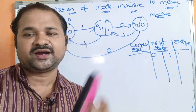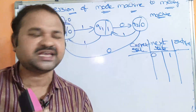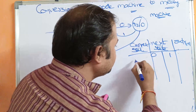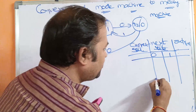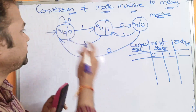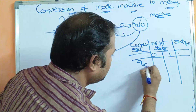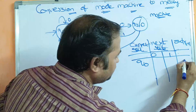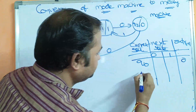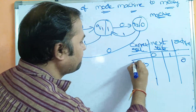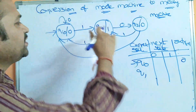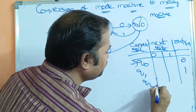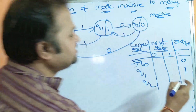For all inputs, the output is the same. The starting state is Q0. Q0 output is 0. Next state is Q1; Q1 output is 1. Next state is Q2; Q2 output is 0.